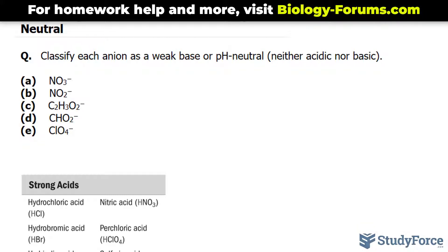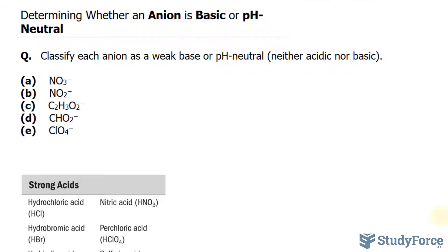Keep in mind two things before we start. If the anion is coming from a strong acid, that means a strong acid completely dissociated. And if a strong acid completely dissociates into its anion, that anion is pH neutral.